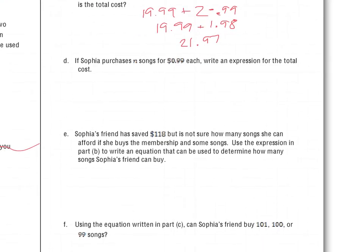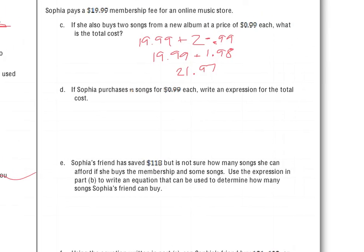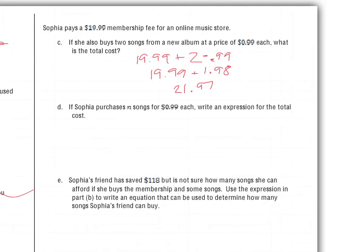If Sophia purchases N songs for 99 cents each, write an expression for the total cost. She still has to pay the membership fee, so include that. The expression is $19.99 plus $0.99 times N.